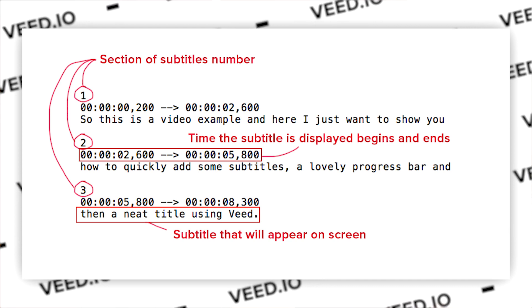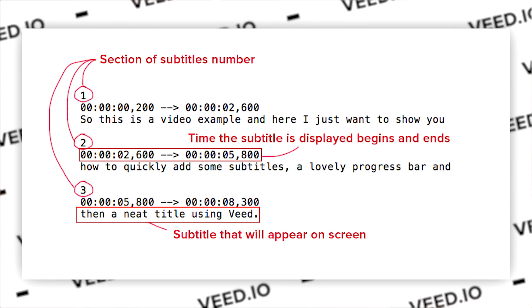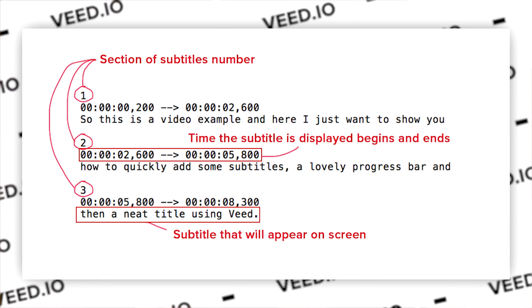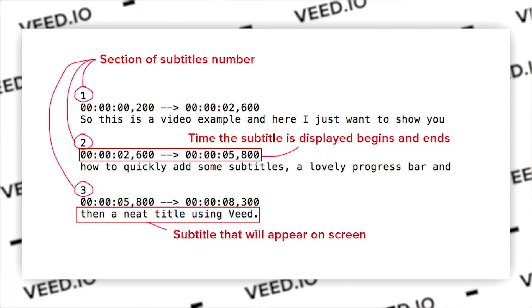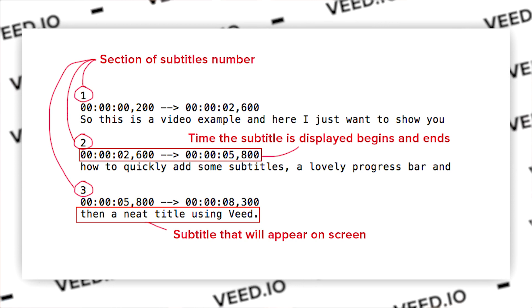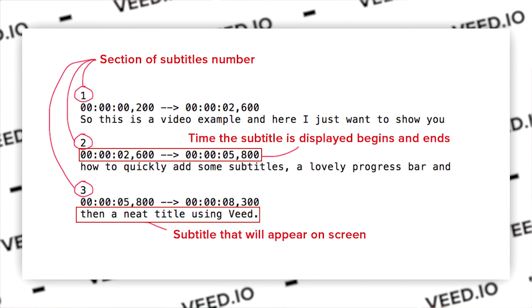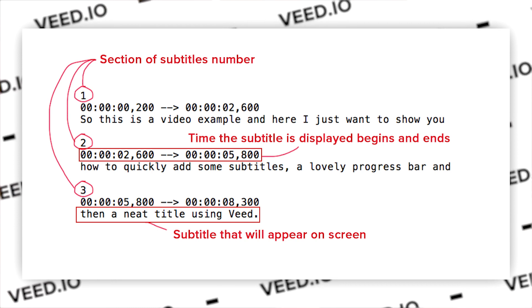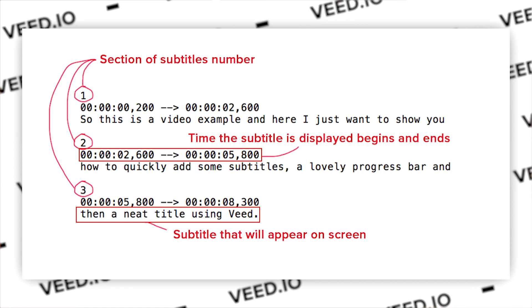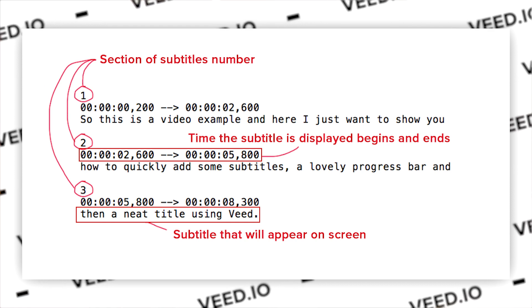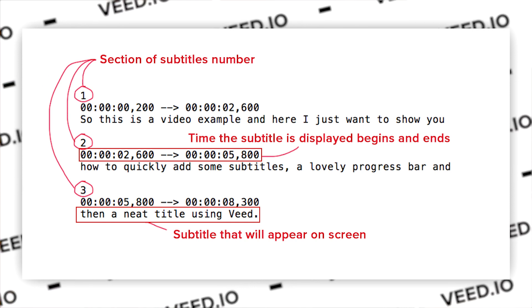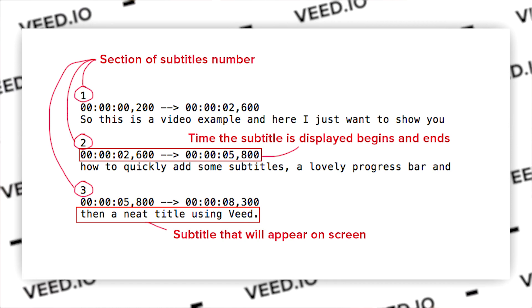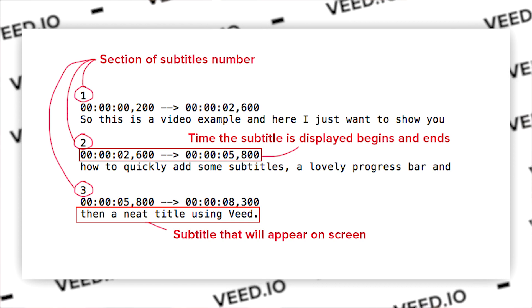Then we have the beginning and ending timecode for when that subtitle is displayed on screen. The timecode is composed of nine digits: the first two being the hour, the second two being the minutes, the third two being the seconds, and the last three being the milliseconds. So this subtitle would start 200 milliseconds after the video starts and end at two seconds and 600 milliseconds. During that timecode, the text displayed on screen reads: 'So this is a video example and here I just want to show you.'